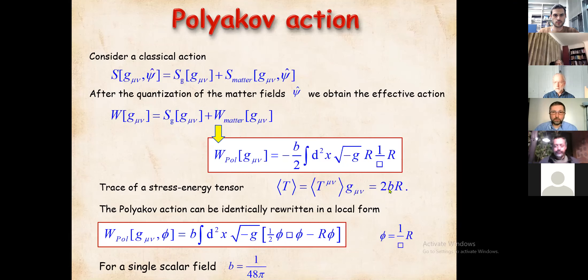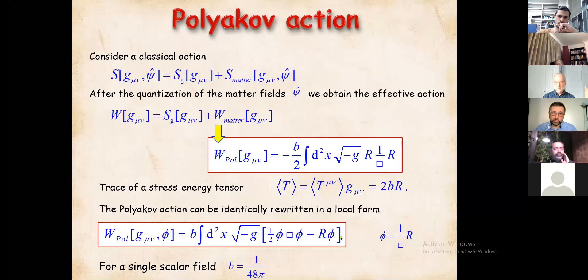We can represent this exact same effective action in local form by introducing an auxiliary field φ. Varying over φ gives an equation of motion relating φ to the Green's function acting on the scalar curvature, and then the Polyakov action takes a simple scalar form. This form will be useful for us in how to generalize to the non-local ghost-free situation — we essentially want to replace the box operator with a non-local operator that includes the entire function.